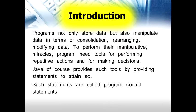Introduction. Programs not only store data but also manipulate data in terms of consolidation, rearranging, and modifying data. To perform their manipulative tasks, programs need tools for performing repetitive actions and for making decisions. Java provides such tools by providing statements to attain so. Such statements are called program control statements. Various program control statements are selection statements, iteration or looping statements, and jumping statements.